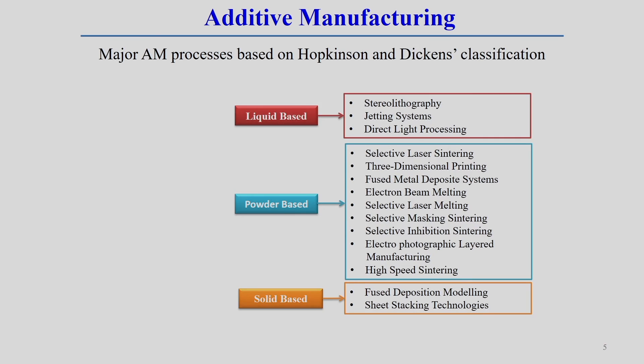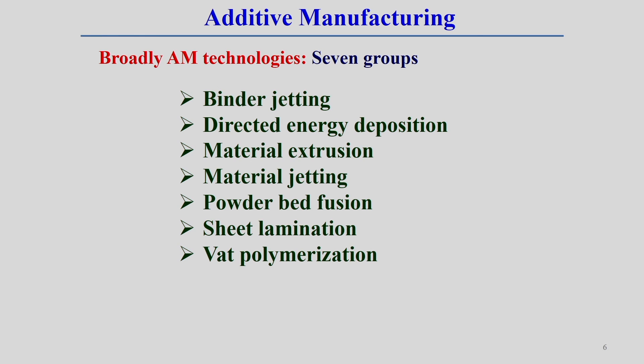Broadly, additive manufacturing is grouped into seven categories: binder jetting, directed energy deposition, metal extrusion, material jetting, powder bed fusion, sheet lamination, and vat polymerization. Directed energy deposition means focusing laser energy while simultaneously supplying feedstock material so that the feedstock is directly fused by the laser. We will discuss the different processes and their working principles in this additive manufacturing technology.